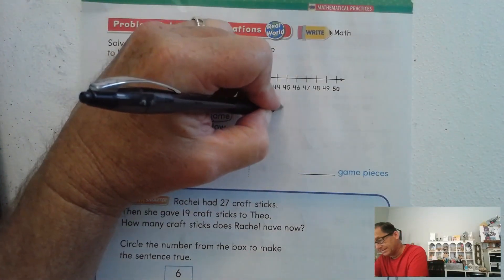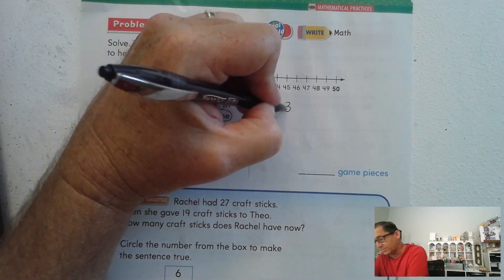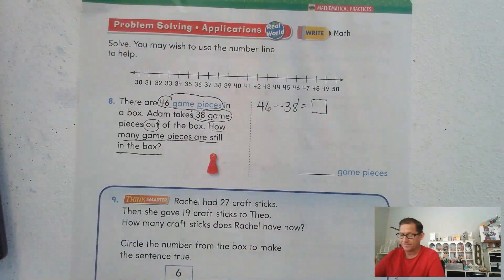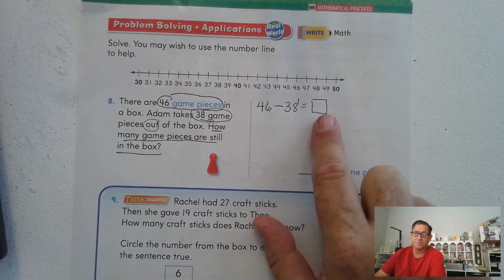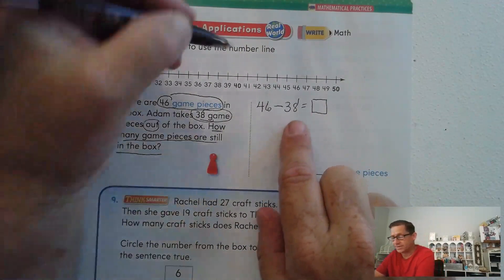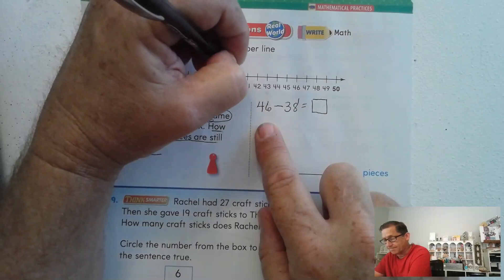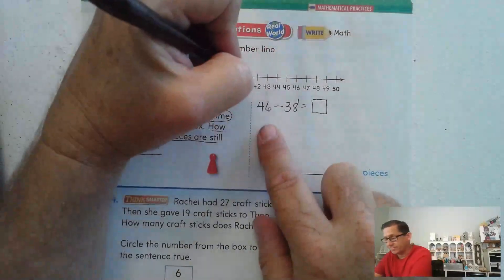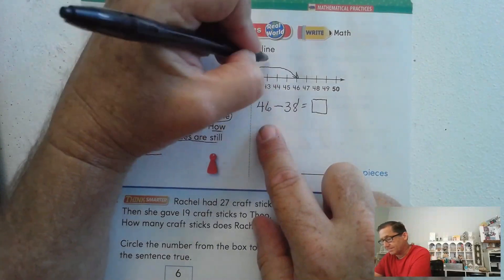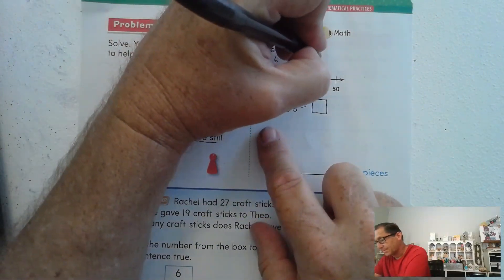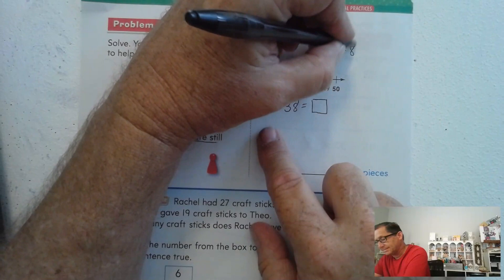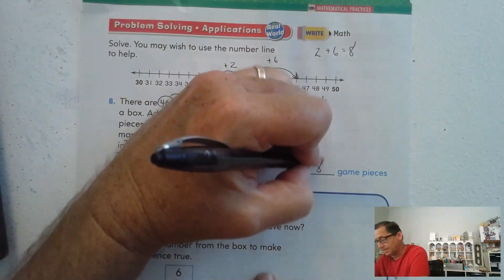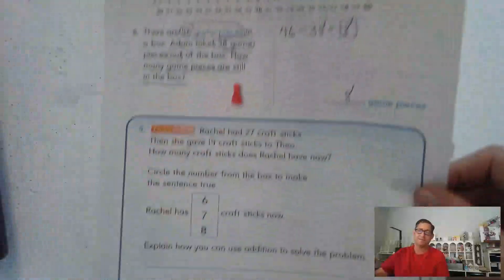So how can we show that? Well, we have 46 and we're subtracting 38, and that's going to leave me the number of pieces still in the box. So let's count up. Let's start at 38 and let's go to 40. And let's go from 40 to 46. So 2 plus 6 is 8. So there are 8 game pieces still in the box.